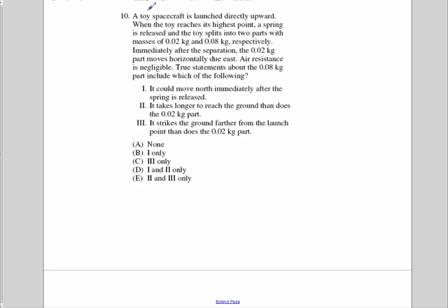Number ten. In this problem, you have a toy spacecraft that's launched directly upward. When the toy reaches its highest point, a spring is released, and the toy splits into two pieces, .02 and .08. Immediately after the separation, the .02 part moves horizontally due east. Air resistance is negligible. What happens to the point .08?